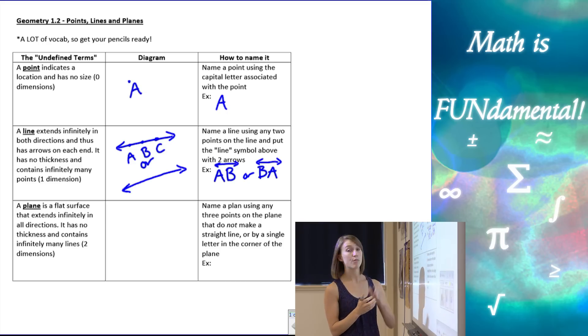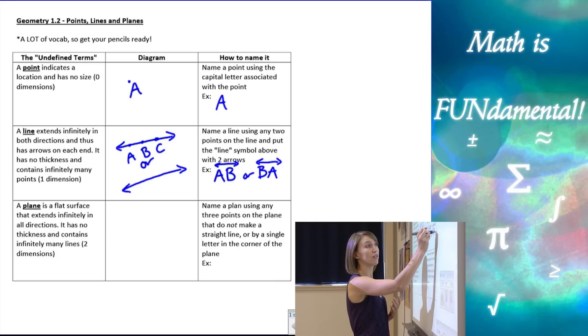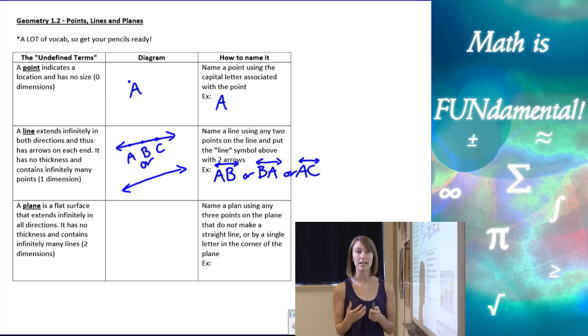Now notice there was also the point C on the line. We don't have to use it. We could have done A, C with our line symbol above it, or B, C, or C, B, but we only want to use two points at a time.